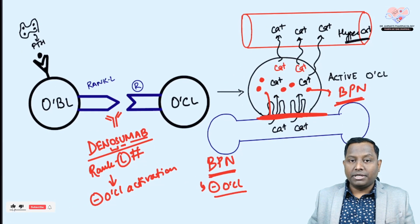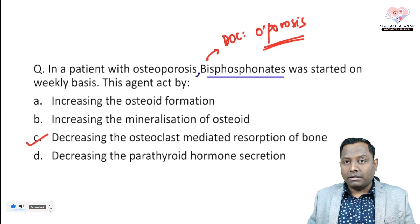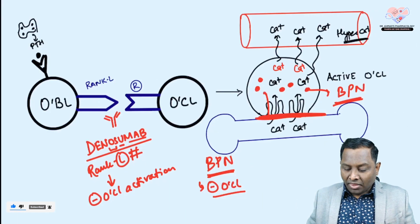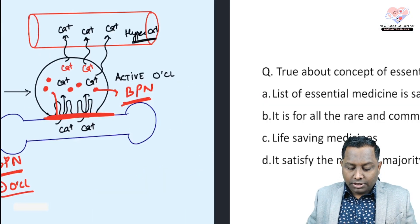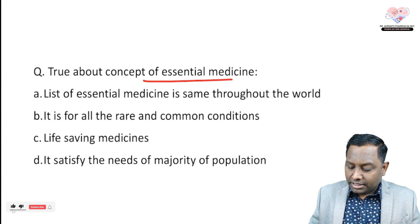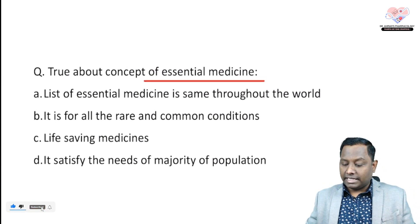Denosumab is a fully human monoclonal antibody — 'osso' or 'osseous' meaning bone. So two important drugs: bisphosphonate as the drug of choice for osteoporosis, and Denosumab as an injectable monoclonal antibody that can also be utilized.